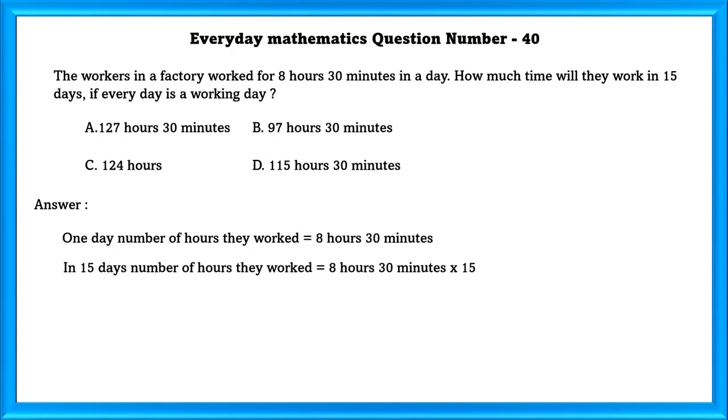First, we are going to multiply hours and then minutes. 8 into 15 is equal to 120 hours. 30 into 15 is equal to 440 minutes. So, 440 minutes is equal to 7 hours 30 minutes. Adding that with hours, we will get 127 hours 30 minutes.